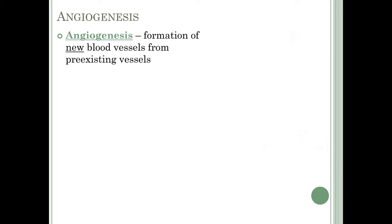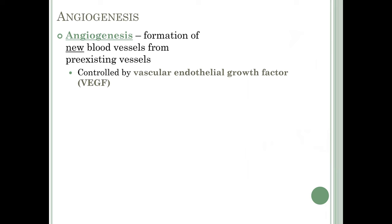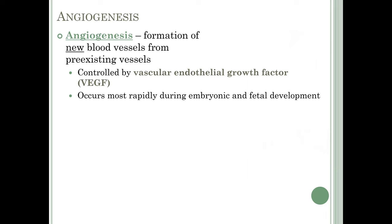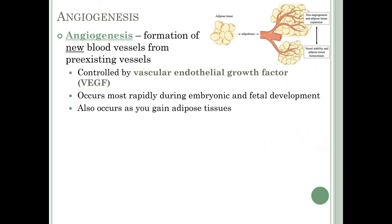Angiogenesis is the formation of new blood vessels from preexisting vessels, controlled by a chemical called vascular endothelial growth factor (VEGF). Angiogenesis occurs most rapidly during embryonic and fetal development, as new blood vessels form for growing body parts, and continues during childhood development. It also occurs as you gain adipose tissue — those fat cells need a blood supply, so angiogenesis grows new blood vessels to the increased adipose tissue.